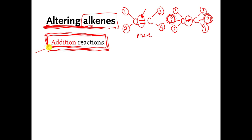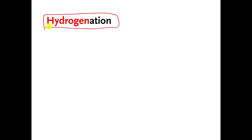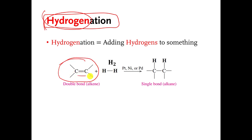There are a bunch of different addition reactions. I'm not going to expect you to memorize the specifics of how they work, but I'm just going to ask you to be able to recognize them based on their names. The first one is called a hydrogenation reaction, halogenation is the second one, and hydration is the third one. These are all examples of addition reactions. Hydrogenation reaction means that you bust that carbon-carbon double bond and you add hydrogens — that's what hydrogenation means.